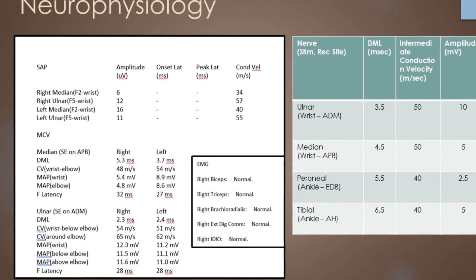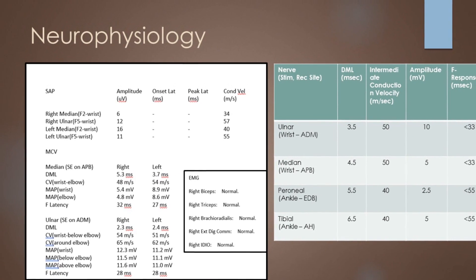The ulnar nerve velocities: the distal motor latency is normal — it's less than 3.5ms. The conduction velocity in the forearm is over 50 metres per second on both sides, which is very normal. Both sides speed up across the elbow, so there are no cubital tunnel lesions to consider. The motor amplitudes are all very normal and the F latencies are also normal at about 28ms for both sides. When you consider the ulnar 28ms F waves, you can look back at the right side F wave for the median nerve and see there's definite prolongation of the F wave latency there.